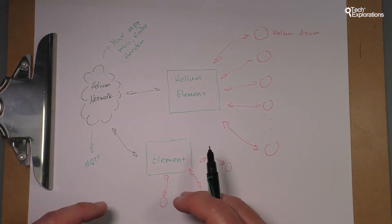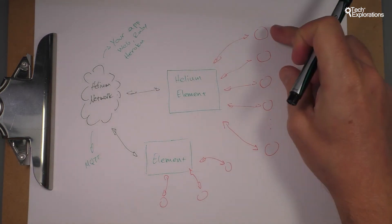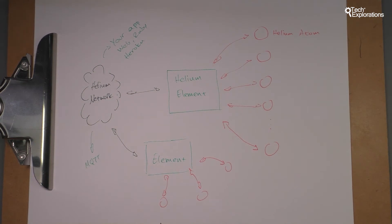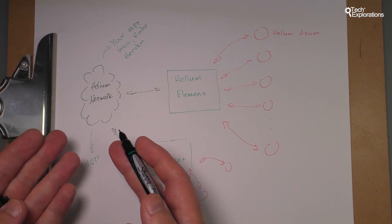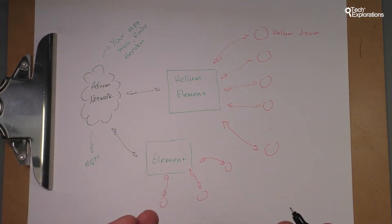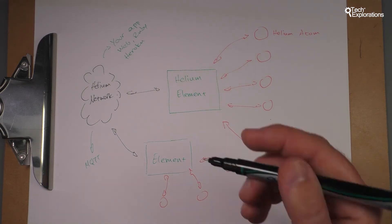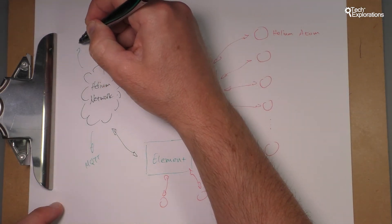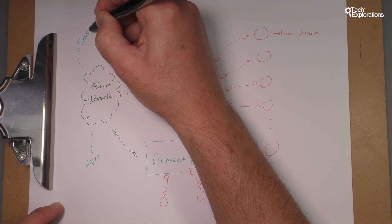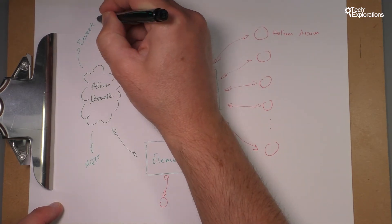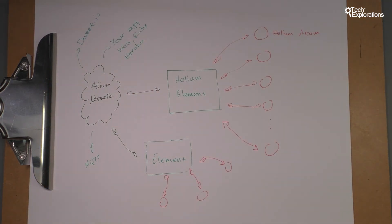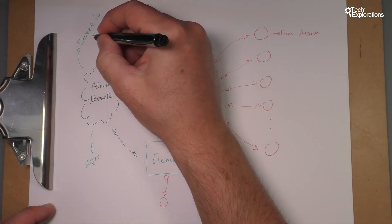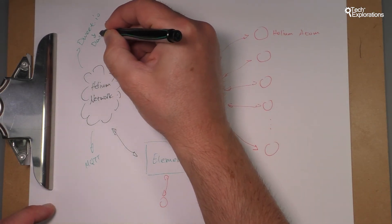And it simply logs the data that my Helium atom sends to my element. Or another thing that you can do is you can forward your data to other internet of things systems or products that are running on the internet. So for example you can choose to forward your data to a service such as dwid.io and then from there you can create your own dashboards.